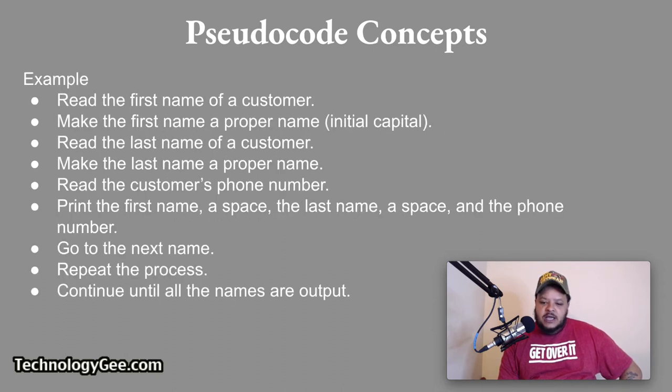So here's an example of some pseudocode. So you see how it is written in plain English, describing exactly what the program is supposed to do. The program is supposed to read the first name of a customer, make the first name a proper name, read the last name, make the last name a proper name, read the customer's phone number, print the space, last name, go to the next name, repeat the process, continue until all the names are output. So basically, just like I just said earlier, think of it as a rough draft for how a code is supposed to be written in function.